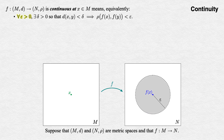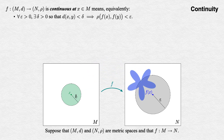Given any positive target radius epsilon around f(x) in the codomain, there exists some positive radius delta around x in the domain, such that all of the points y within delta of x in the domain get sent by the function f to points f(y) within epsilon of f(x) in the codomain. The same remark applies to this last implies as was discussed in our sequence video: it could be written as a for-all statement, an implication, or a for-all implies statement, and it makes no logical difference.